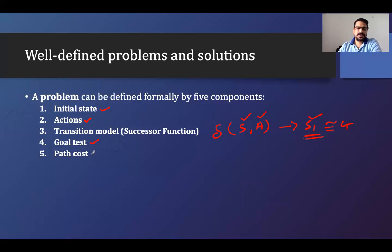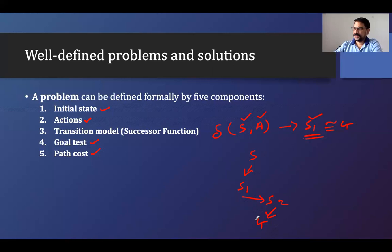Then we have the path cost. Achieving from one state to another state to the goal — what are the costs we have incurred? Cost may be based on time, energy consumption, or the distance traveled. So the cost is defined relative to each and every path. These are the five components required in problem formulation: initial state, action, transition model, goal test, and path cost.